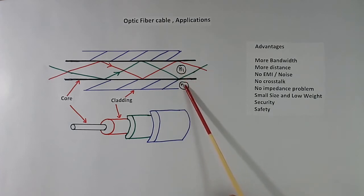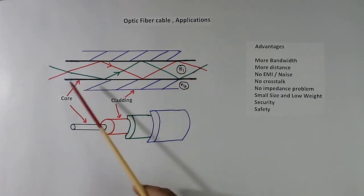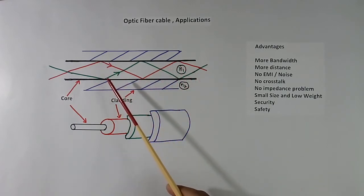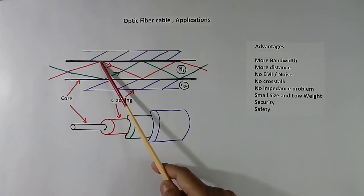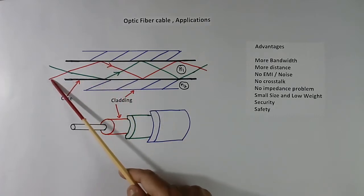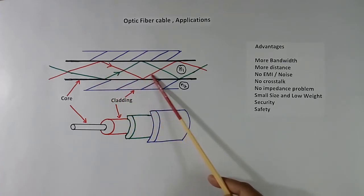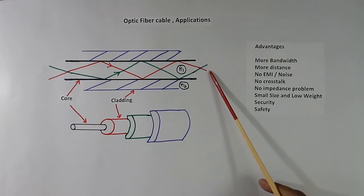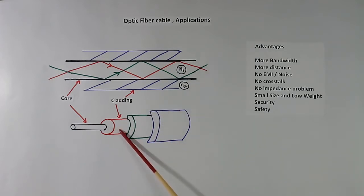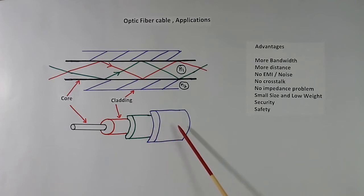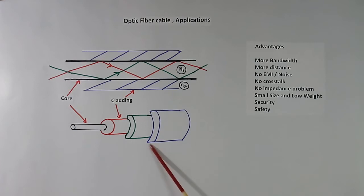The refractive index of the core is always more than the refractive index of the cladding — N1 is more than N2. Light travels in this fiber on the principle of total internal reflection. The construction of the cable consists of the core, cladding, then a buffer, a jacket, and other mechanical protection layers.